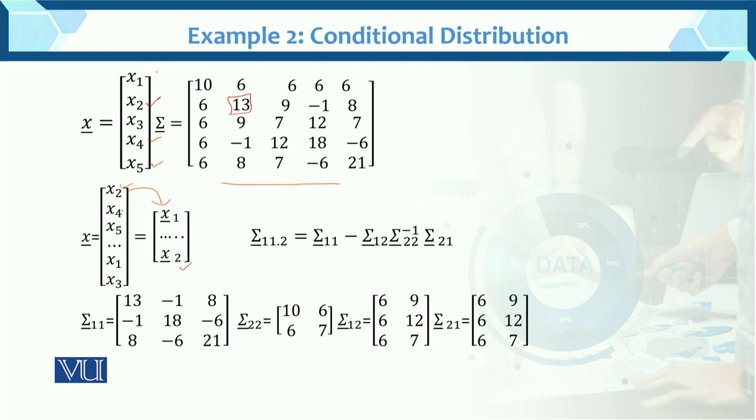Now next is 2,4. Second row, fourth value. x2, x5. Second row, fifth value. So the first row is arranged.